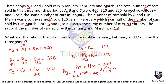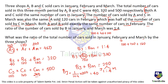Both A and C sold the same number of cars in January, and the same in March. C sold 240 in March, so A also sold 240 in March. A sold 120 in February and 240 in March: 120 plus 240 is 360, so 460 minus 360 equals 100 cars for A in January. C in January is also 100. C in February: 500 minus 340 equals 160. Now, total cars sold in January: 100 by A, plus 40 by B, plus 100 by C. In February: 120 by A, 120 by B, 160 by C. In March: 240 by A, 160 by B, 240 by C.